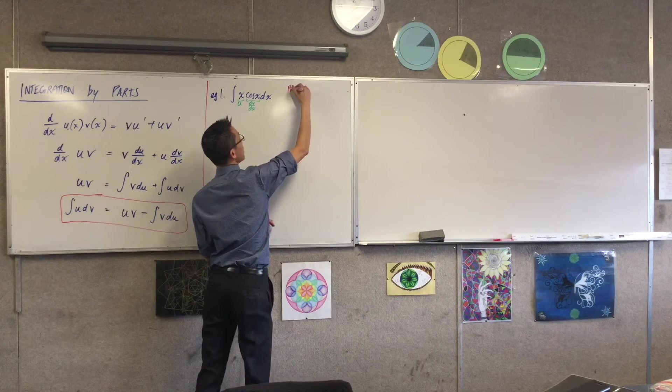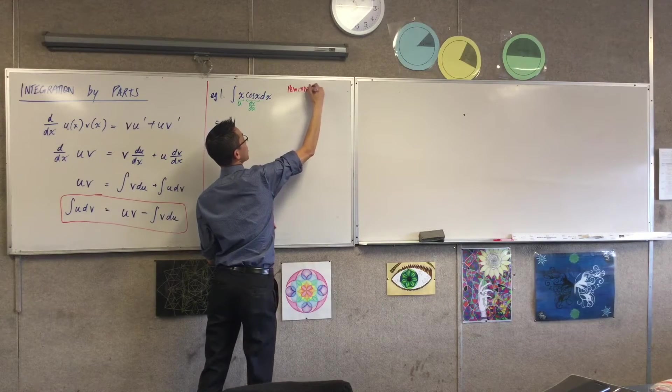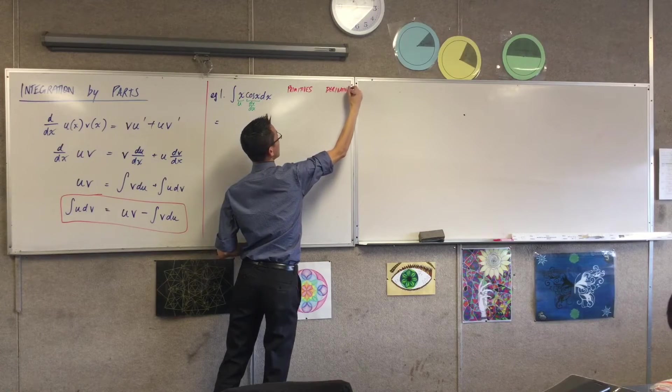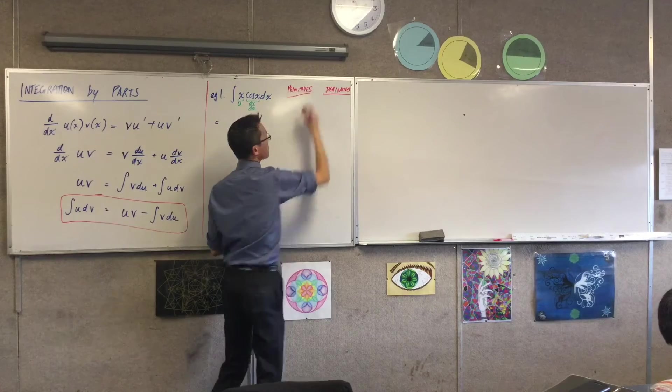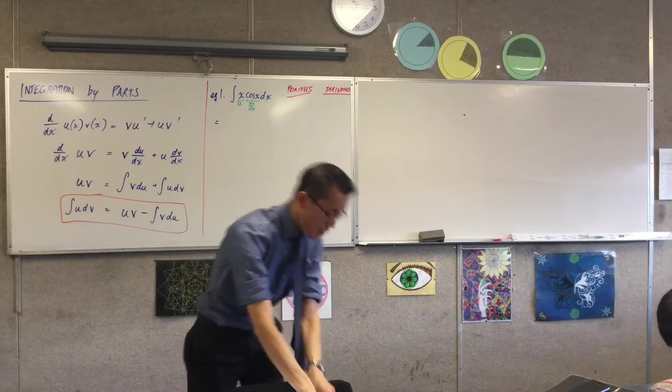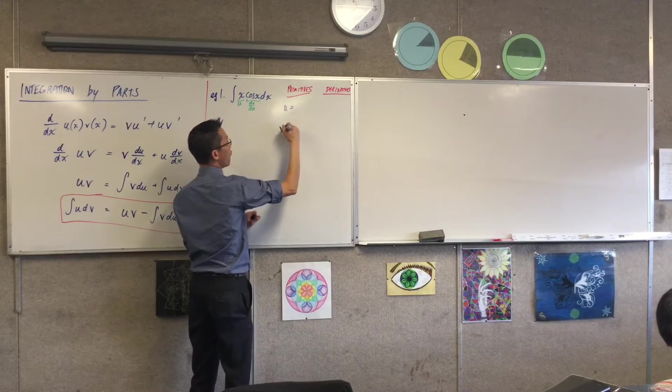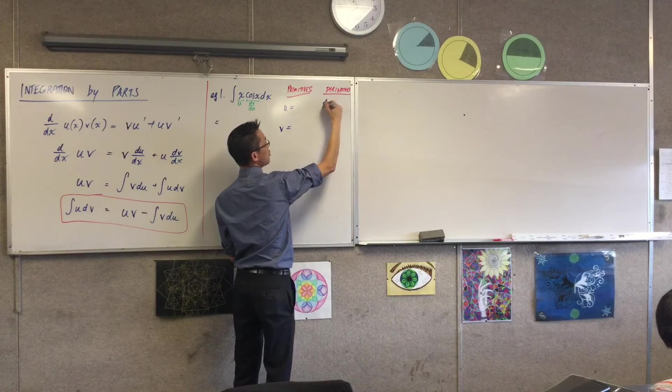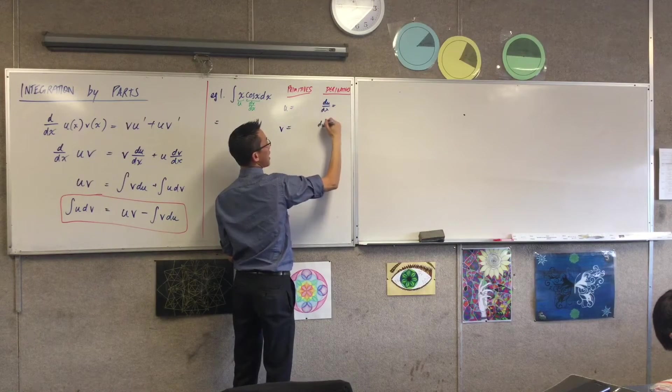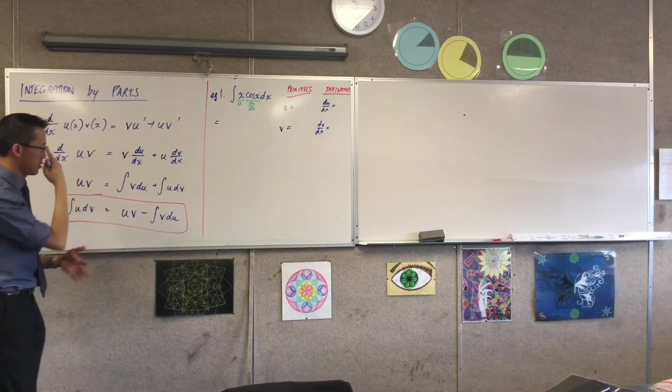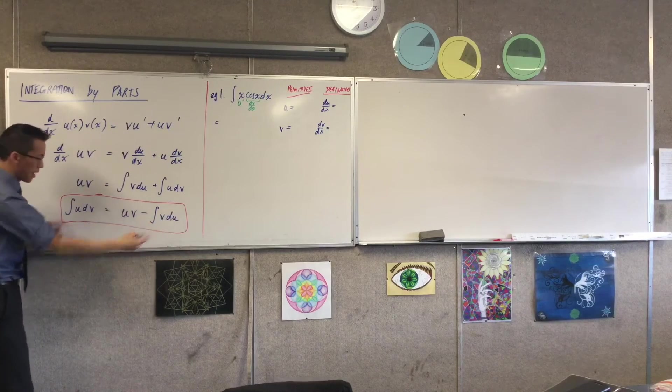What I'm looking for is two primitives and two derivatives. So I'm looking for a u, a v, a du/dx and a dv/dx. So these four parts are what make up integration by parts.